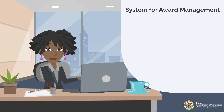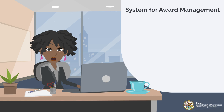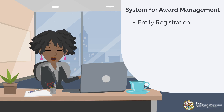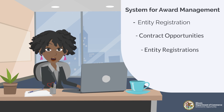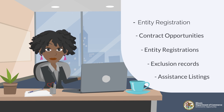SAM stands for System for Award Management, and SAM.gov is an official website of the U.S. federal government. By registering your entity with SAM.gov, you are eligible to do business with the U.S. government. SAM.gov can be used for various reasons such as searching for contract opportunities, entity registrations, exclusion records, and assistance listings.